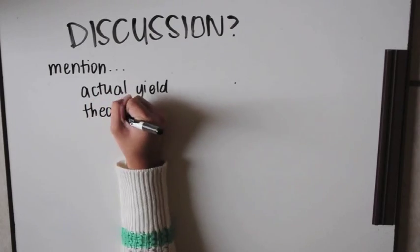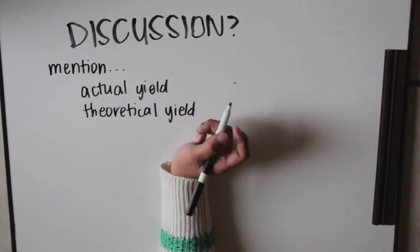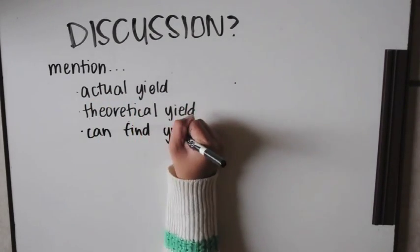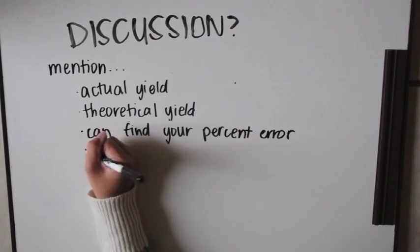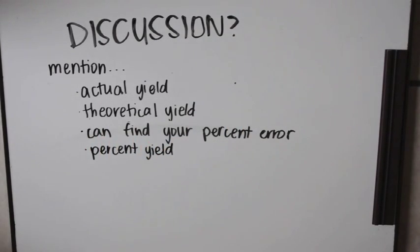You could do what I do, which consists of mentioning your actual yield, your theoretical yield, your percent error, or your percent yield. You can also include sources of error,